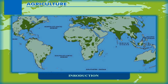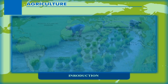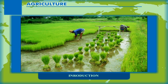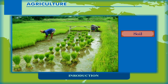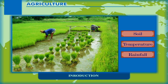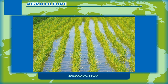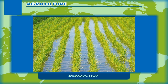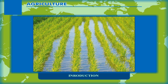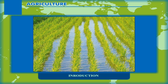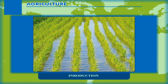The map on the previous page shows the distribution of arable land in the world. You will notice that cultivation of crops is possible only in limited areas. Soil, temperature, and rainfall are some of the important physical controls. Every crop has certain basic requirements of temperature, moisture, and nutrients. While some crops are suitable for tropical climate, others may be grown only in subtropical and temperate regions.